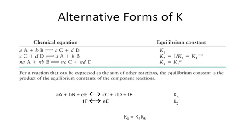Alternative forms of K. The value of K, the equilibrium constant, depends on the form of the chemical equation. For a generic chemical equation, A moles of A plus B moles of B in equilibrium with C moles of C and D moles of D, the equilibrium constant can be calculated — let's call it K1.